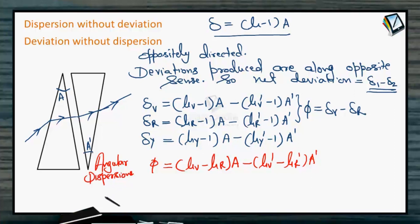This is angular dispersion φ and we have the mean deviation. So there are two conditions: the first condition is A and this is condition B. If the question is based on condition A, then what are you required to do? And if the situation is like B, then what do you have to do? For case A, it is dispersion without deviation.